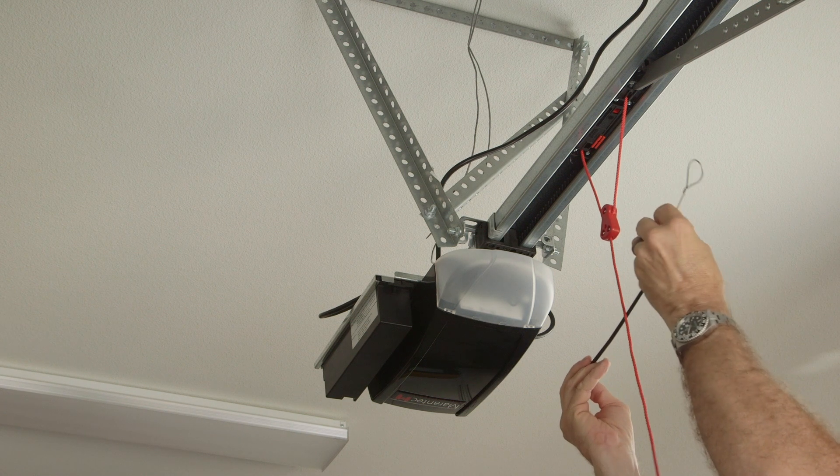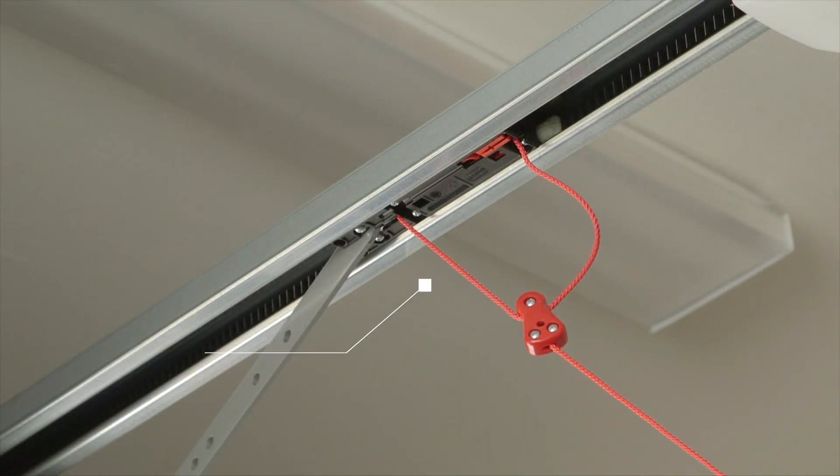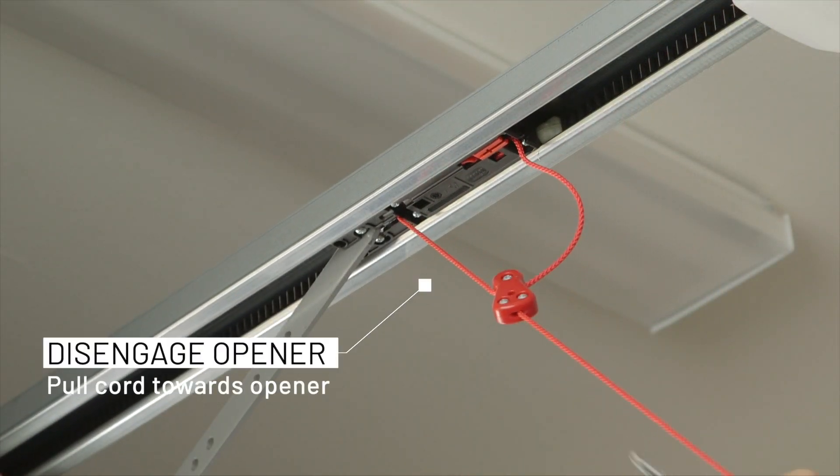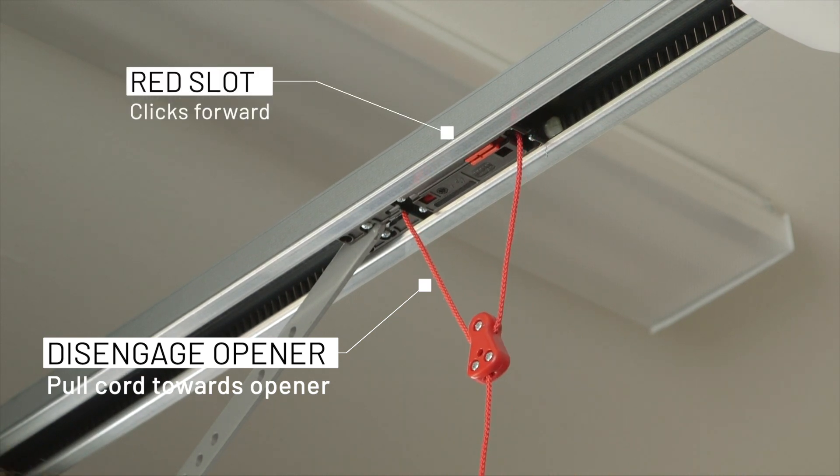This is the vault lock adapter kit for the Mirantech garage door opener. When you disengage the garage door opener, you pull the cord towards the opener and that red slot will click forward.